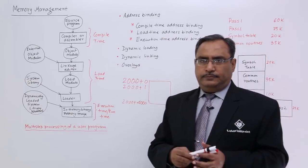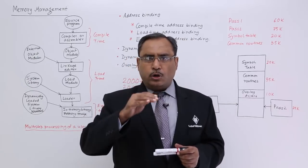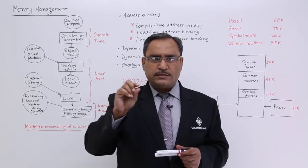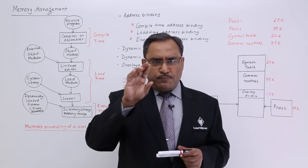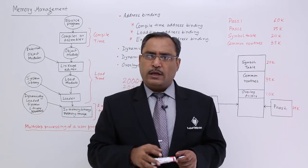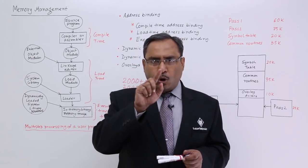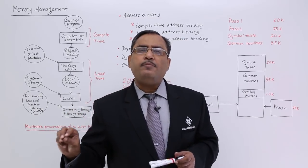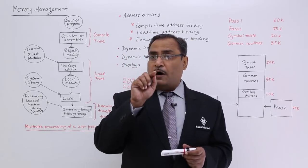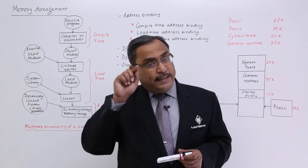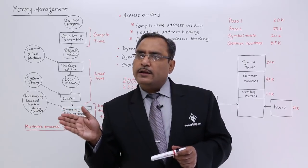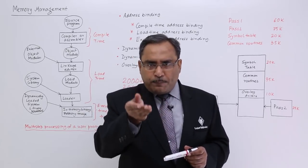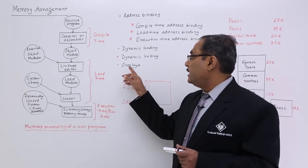In case of dynamic linking, suppose there is a particular module and the module has called different functions. All those function bodies are written in the system libraries. When the respective function is called, only then the respective library routine comes into the memory and gets loaded to provide the body of the function — that is known as dynamic linking.